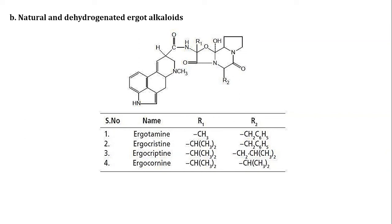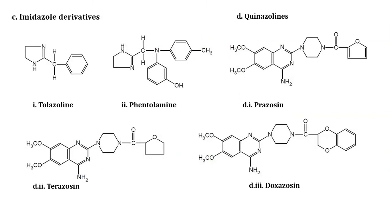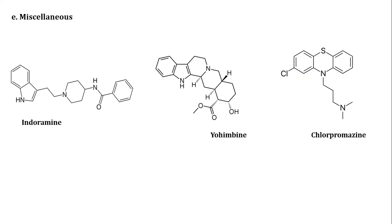Examples of ergot alkaloids include ergotamine and ergocristine. Third are imidazole derivatives such as tolazoline, phentolamine, prazosin, terazosin, doxazosin, and methyldopa, indoramine, yohimbine, and chlorpromazine.